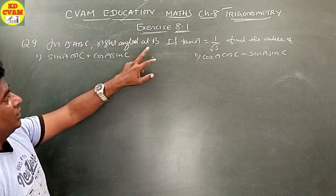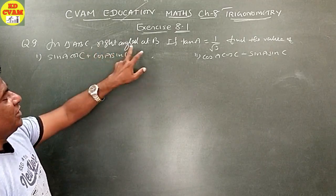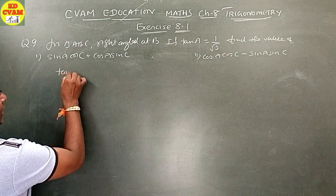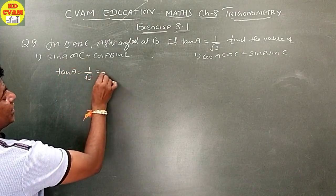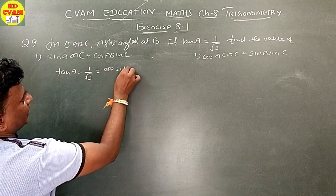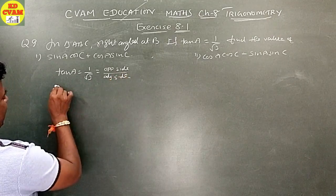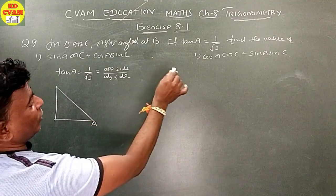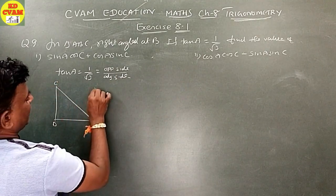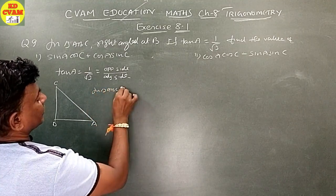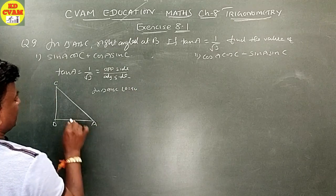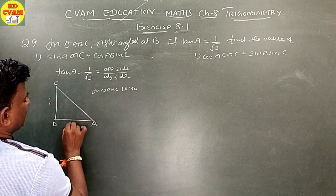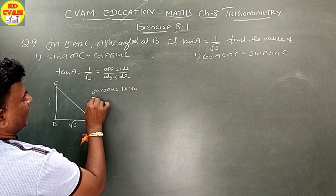Question number 9: in triangle ABC, right angle at B. If tan A equals 1 upon root 3. Tan A equals opposite side upon adjacent side. So taking triangle ABC with angle B equal to 90, opposite side is 1 and adjacent side is root 3.